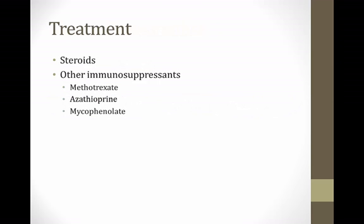The first-line therapy for sarcoidosis is corticosteroids, which are usually effective at reducing symptoms. However, long-term steroid use is associated with weight gain, diabetes, and osteoporosis, so patients are generally converted to other immunosuppressants such as methotrexate, azathioprine, or mycophenolate. These are sometimes called steroid-sparing agents because they serve as alternatives to corticosteroids. That concludes our module on sarcoidosis.